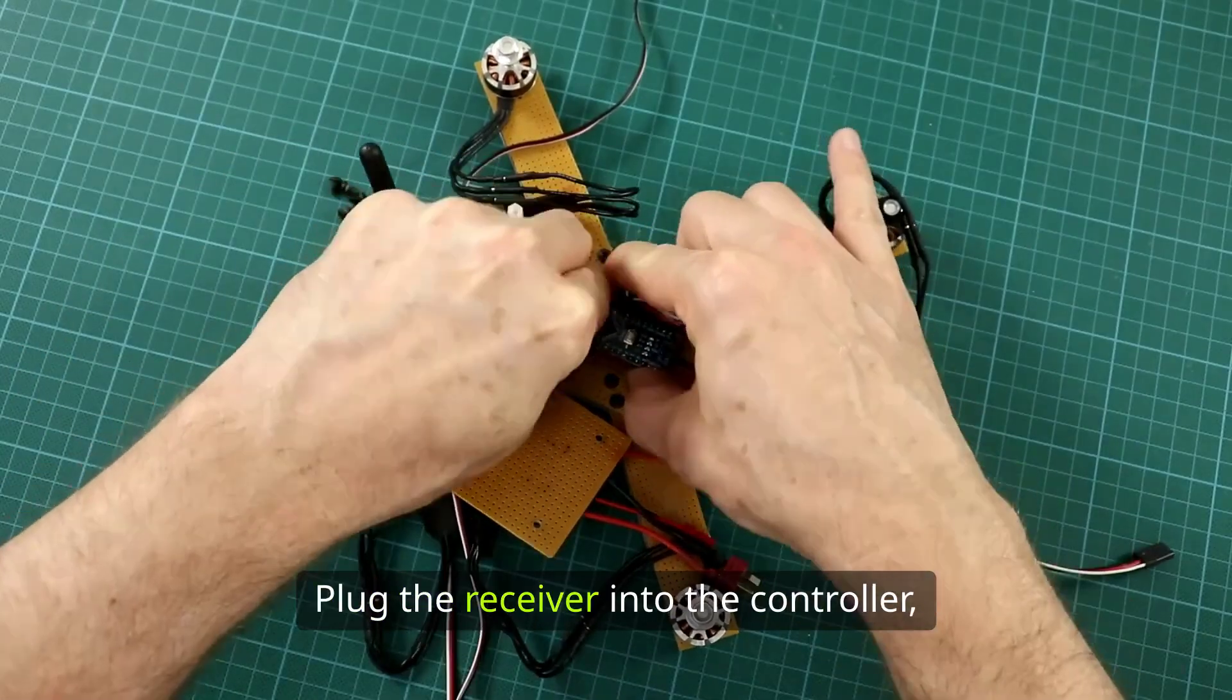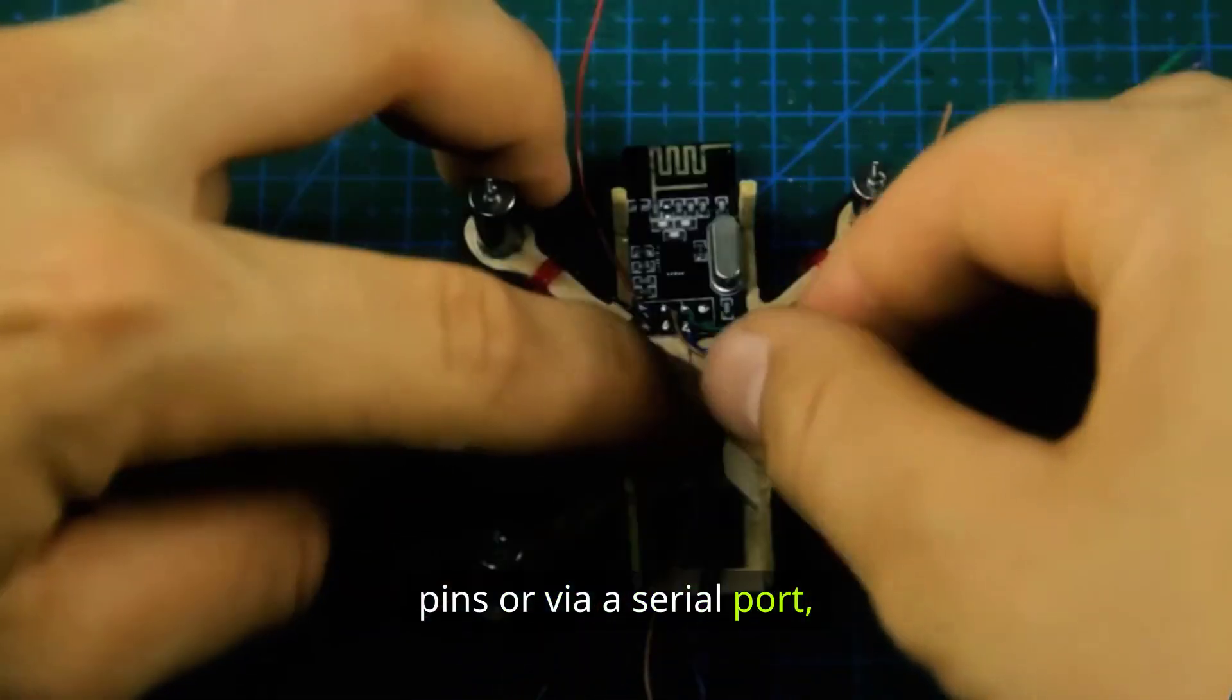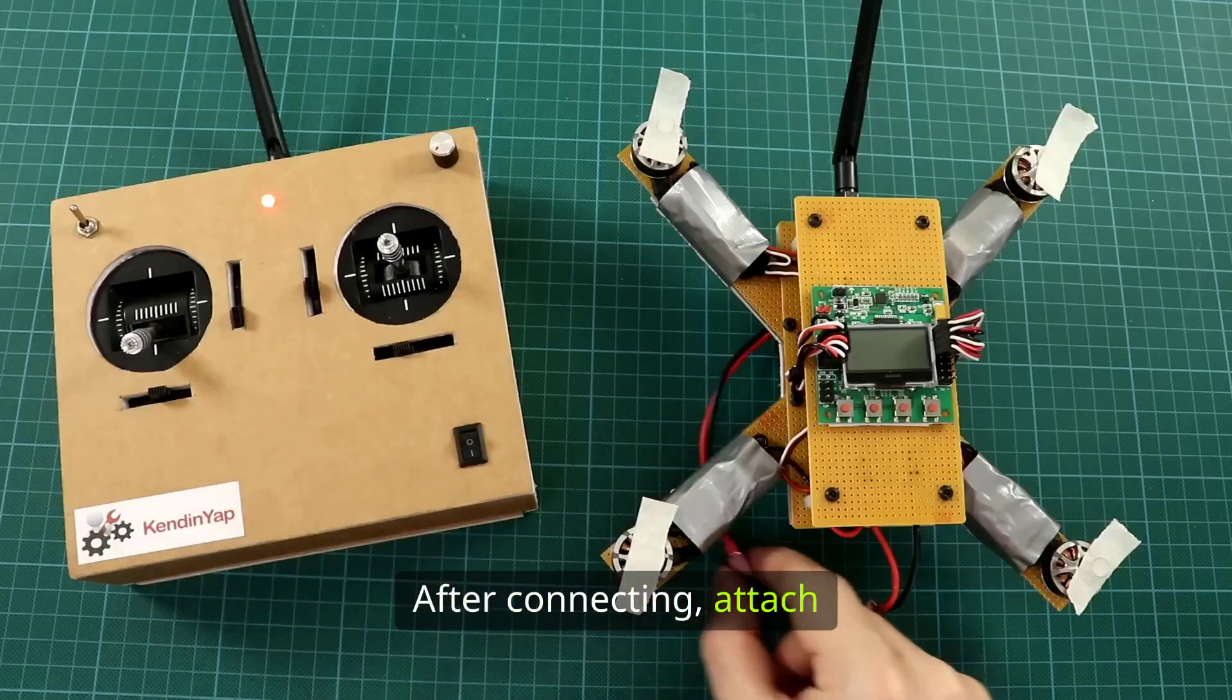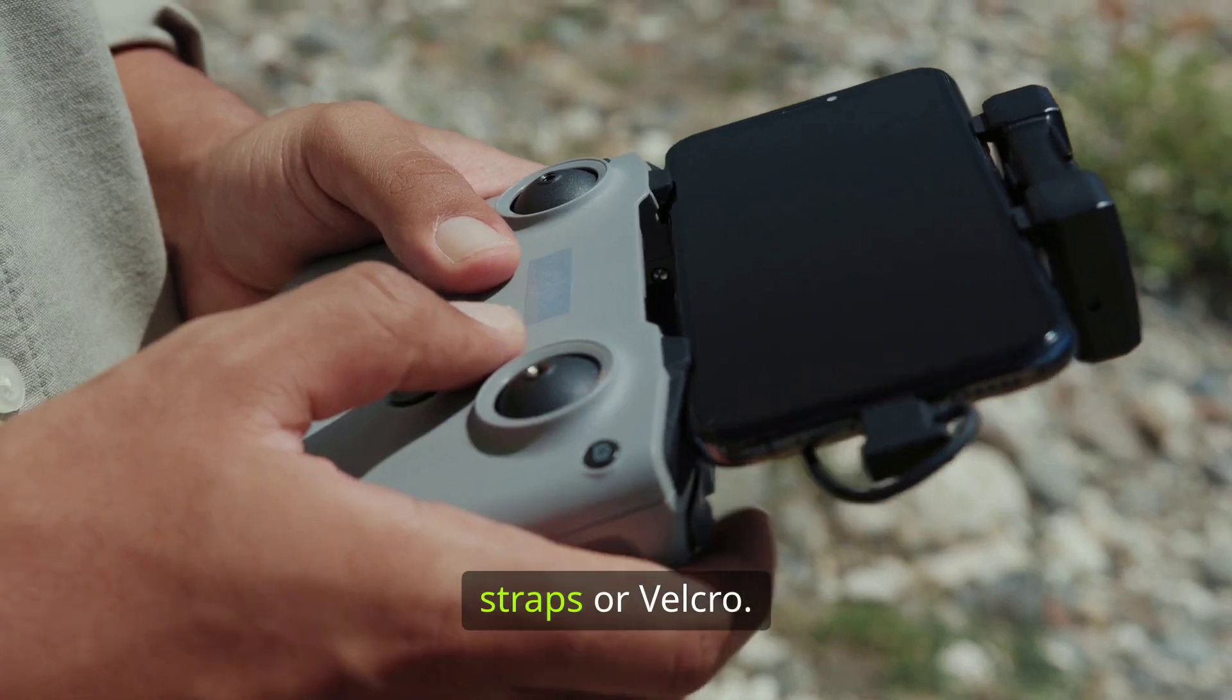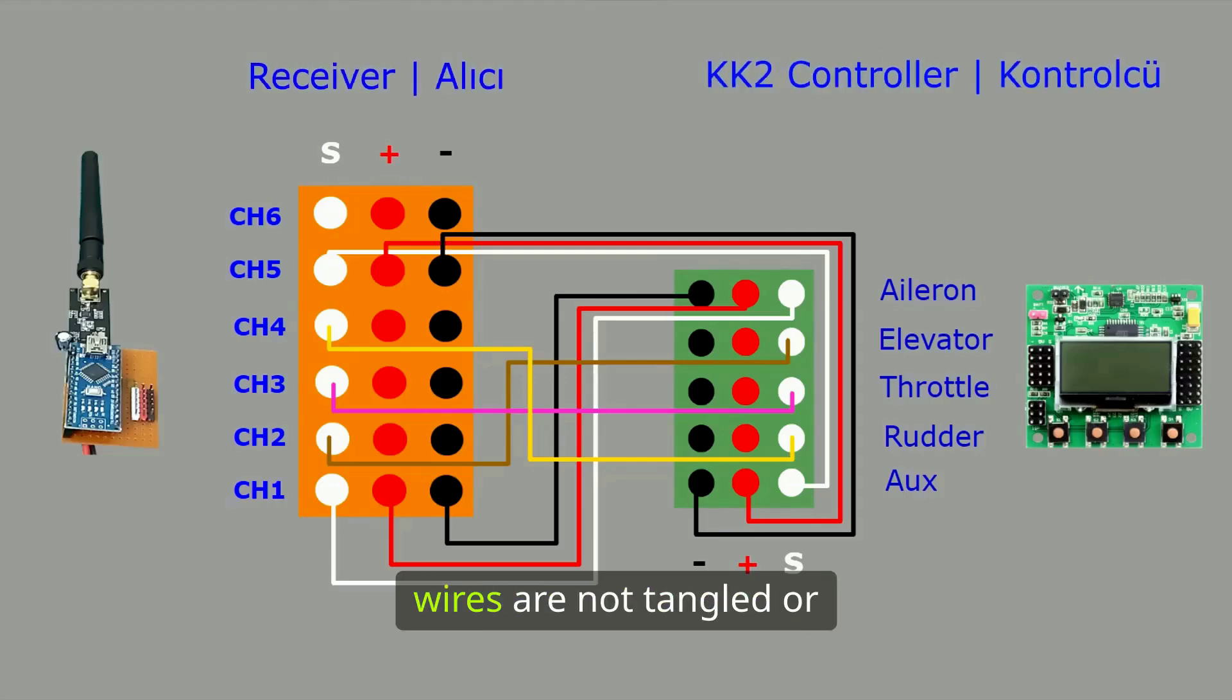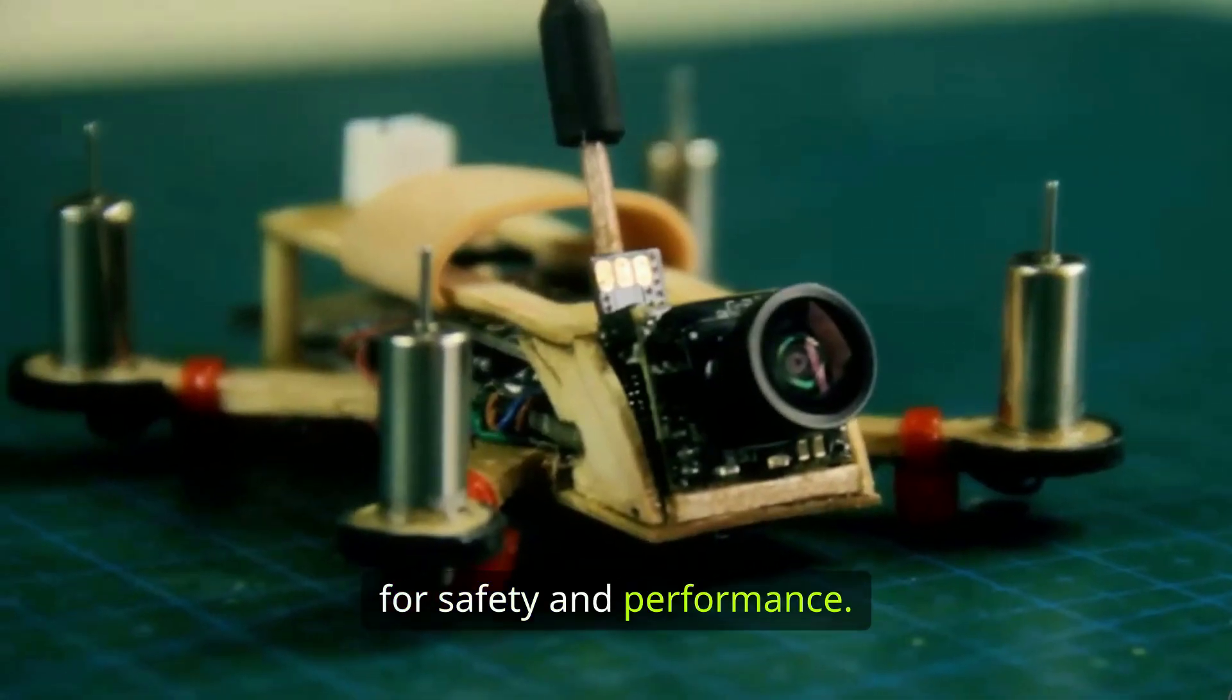Plug the receiver into the controller, either through standard pins or via a serial port, depending on compatibility. After connecting, attach the battery to the centre of the drone to ensure balance. Secure it with straps or Velcro. Carefully check all connections, making sure that the wires are not tangled or hanging loosely. Neat and tidy wiring is very important for safety and performance.